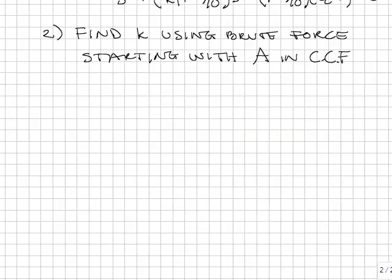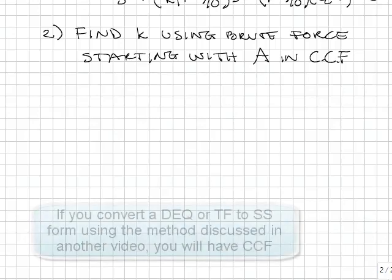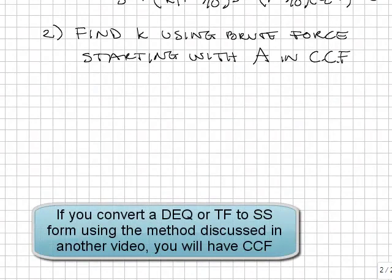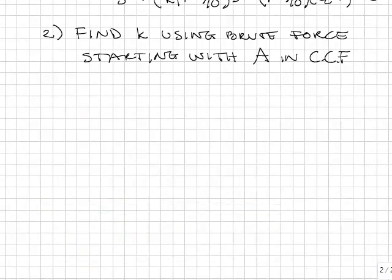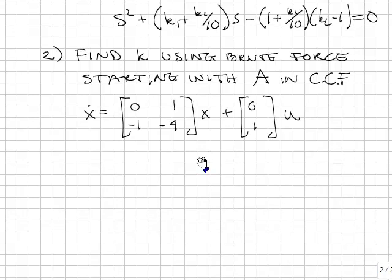So the second method is to find k using brute force, but we're going to start with A in controller canonical form. This is somewhat contrived because you have to get a system in controller canonical form, but you can do that using similarity transformations. So here's a system in controller canonical form. By the way, you should realize right away that the transfer function for this can be written directly because the coefficients for the characteristic equation show up right here. And you can write the transfer function directly.